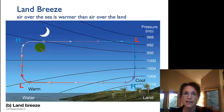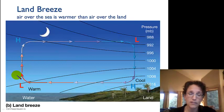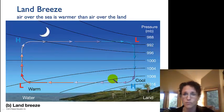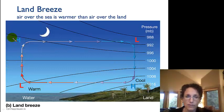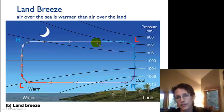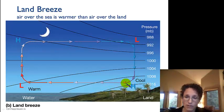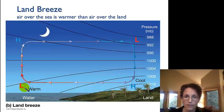And then at night, the sea is warmer because it takes longer for the water to cool off. The air over the sea is warmer than the air over the land, so that air is going to rise and we're going to have a high pressure there. The air gets pushed from high to low, it cools and sinks, and we have a high pressure pushing the air to the low pressure area here.